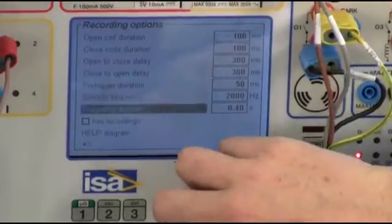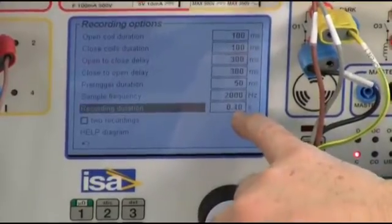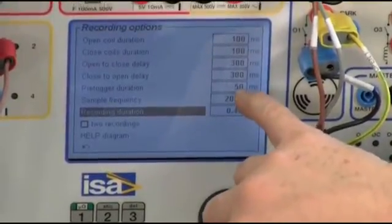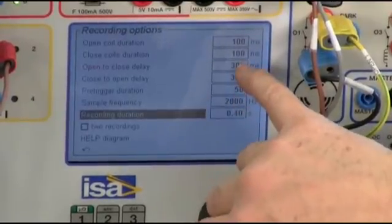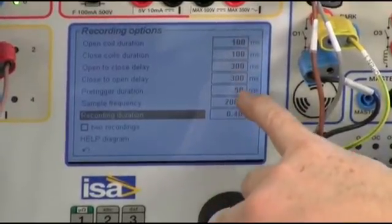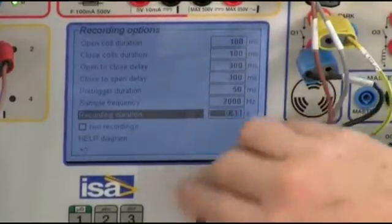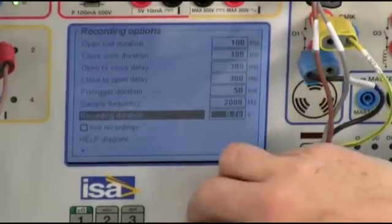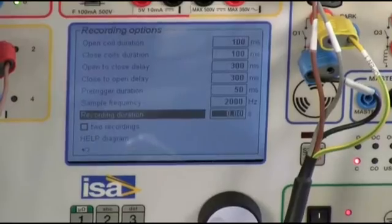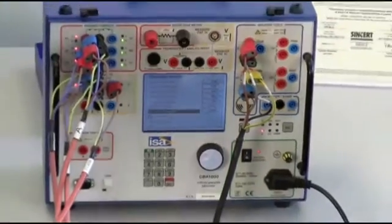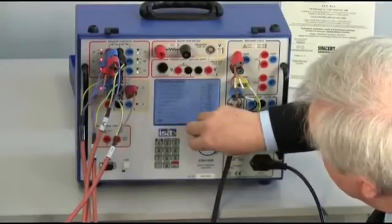Pre-trigger, okay, 50 milliseconds, 2 kilohertz, recording duration. This value is too short. Why? Because I have 50 milliseconds of pre-fold, then 300, then 300 is 600, 650. I program here 800 milliseconds, that is 0.8 seconds, so that the complete sequence is displayed on the screen.